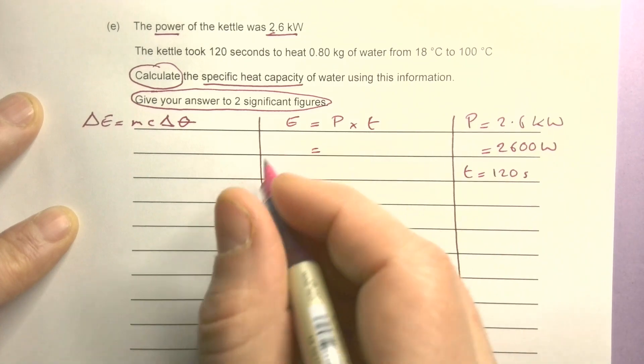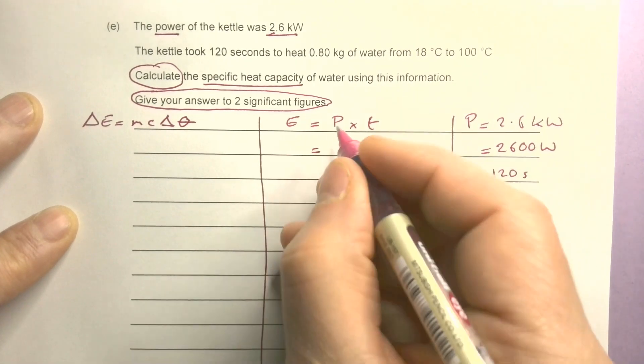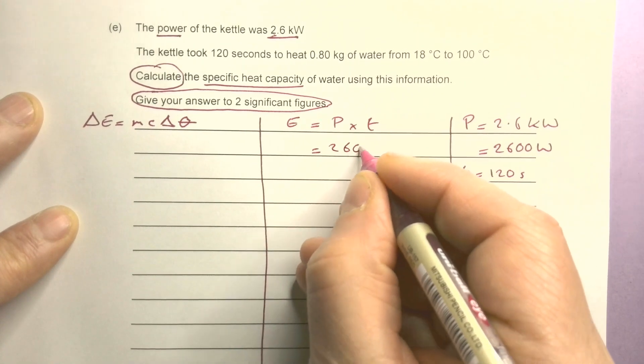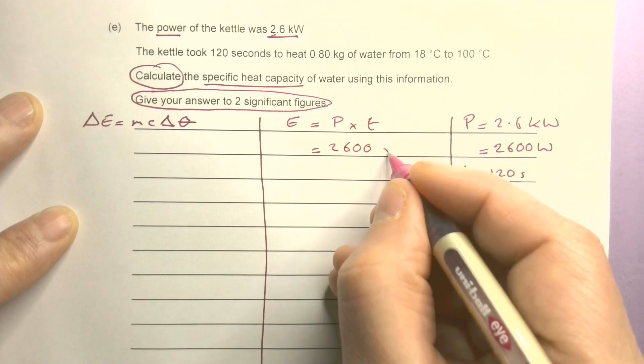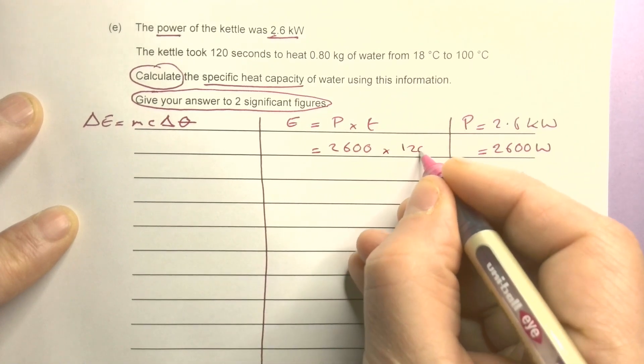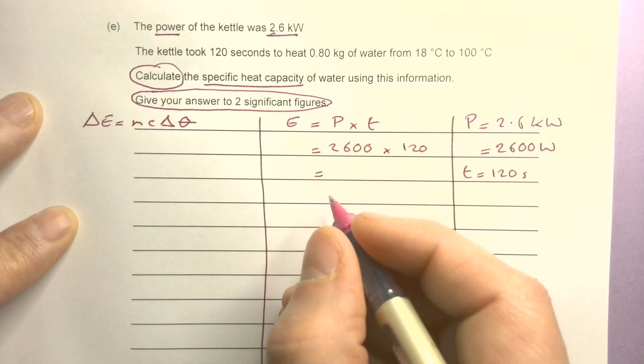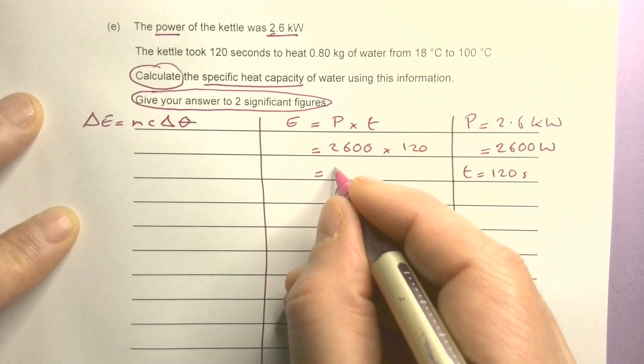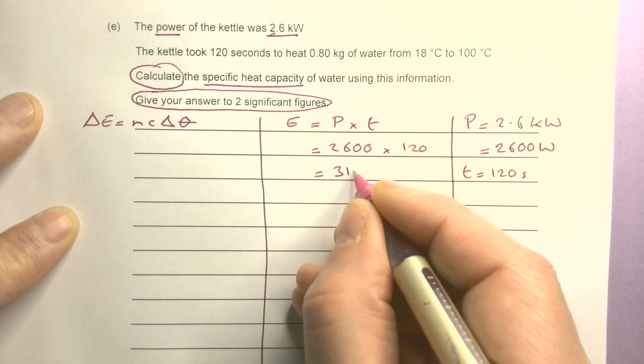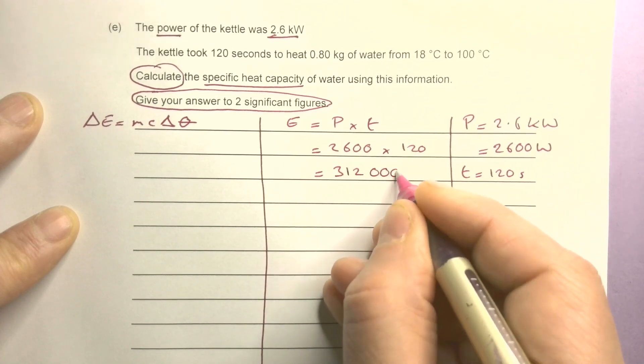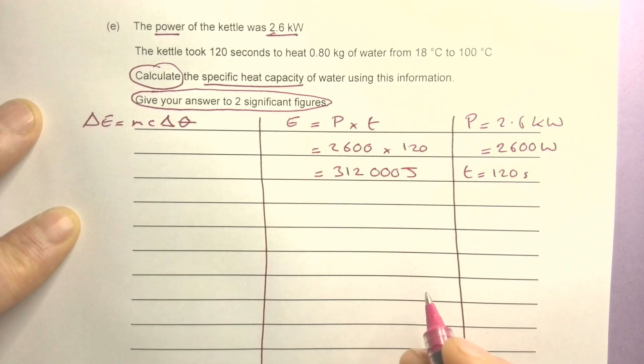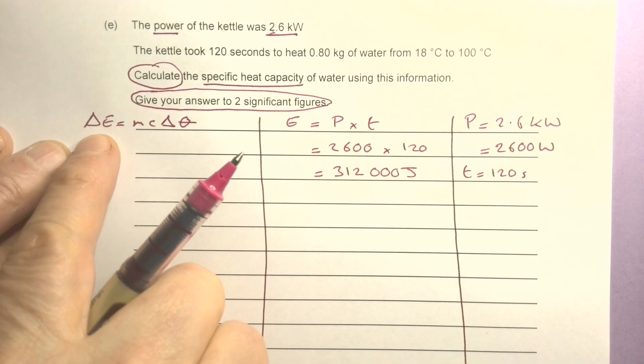Let me put that in there. So the power is 2600 times the time which is 120 seconds, gives me a total of 312,000 joules. So that's my ΔE, my change in energy.